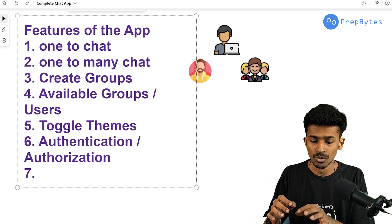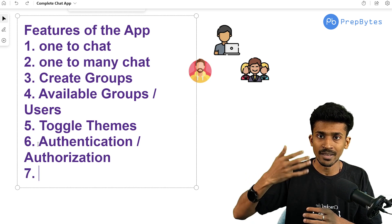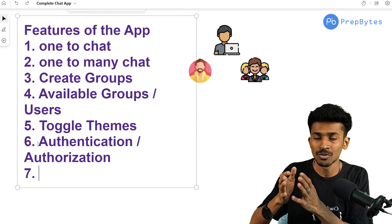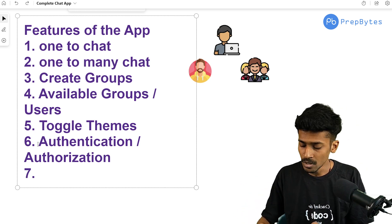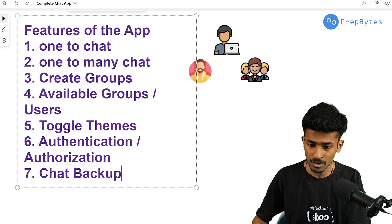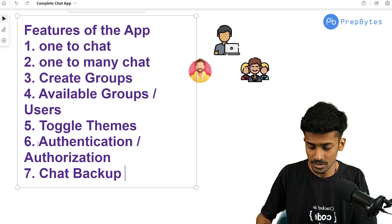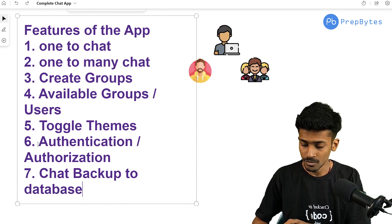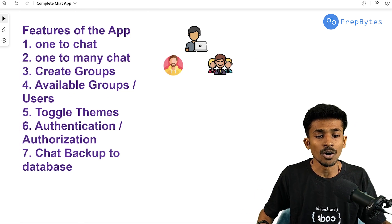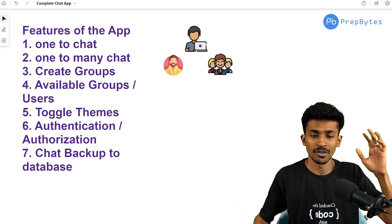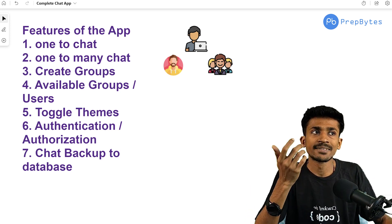Authentication and authorization are definite requirements. As for persistent chats — let's say you log in, join a group, text someone, and close the application. The next time you log in, I want those chats to still be there, backed up so that all groups and chats from prior sessions are loaded up. We're going to implement a chat backup feature to our database to keep chats and groups persistent.